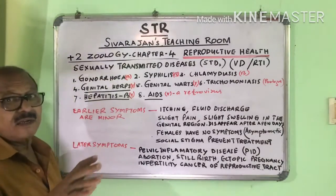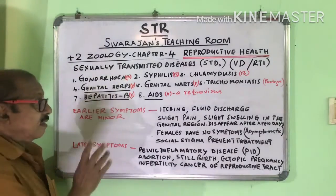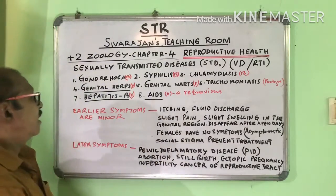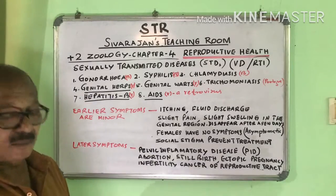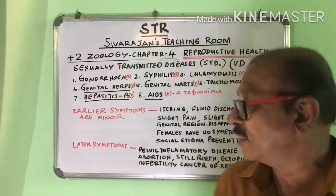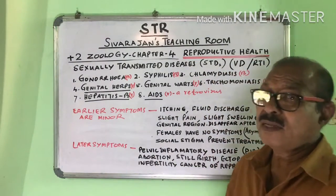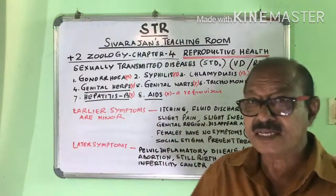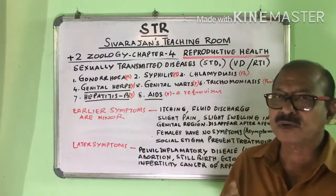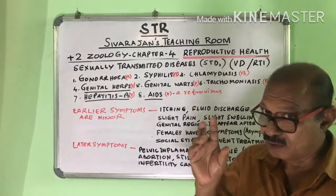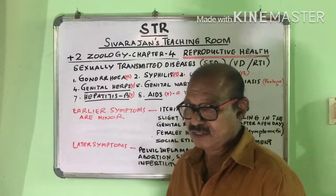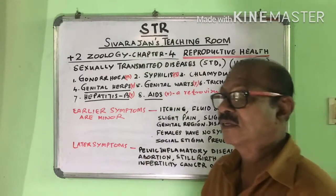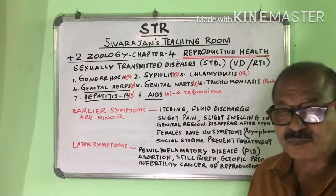Eight diseases are mentioned: Gonorrhea, Syphilis, Chlamydiasis, Genital Herpes, Genital Warts, Trichomoniasis, Hepatitis B, and AIDS. Virus, bacteria, and protozoans are the causes of these diseases. What causes sexually transmitted diseases? The causes are viruses, bacteria, or protozoa.